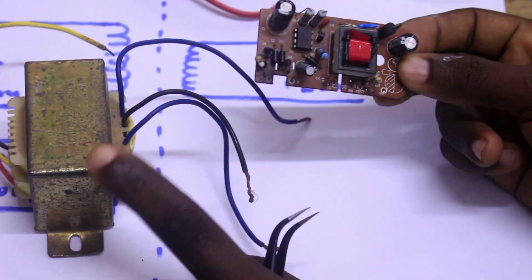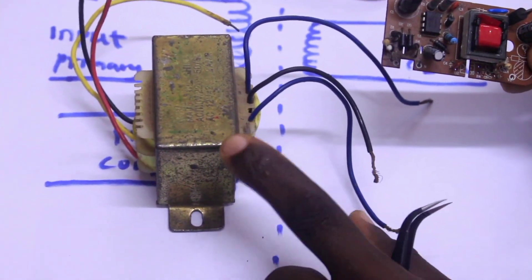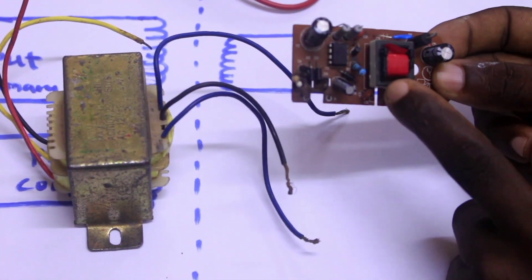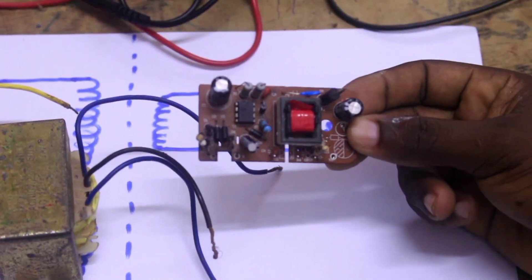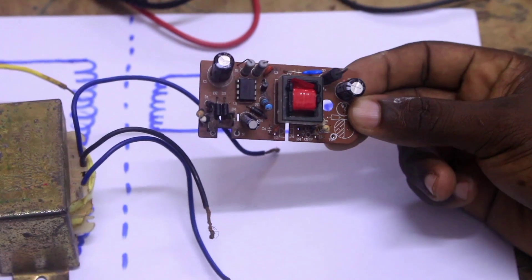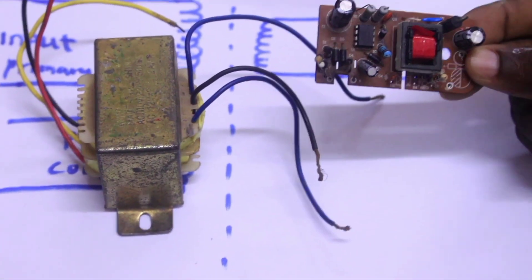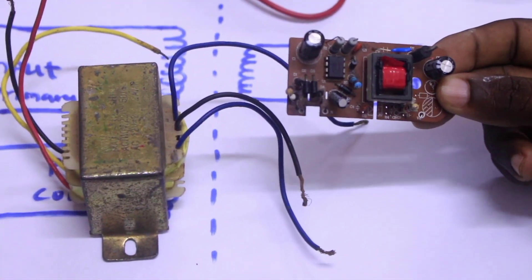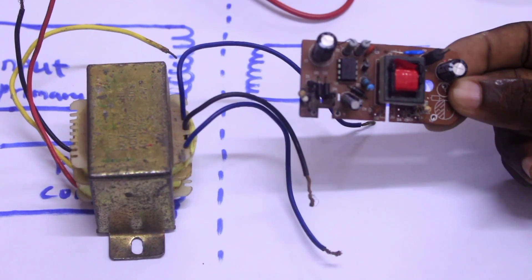This transformer operates at 50 to 60 Hz while this transformer operates between 10 kHz to 1 MHz. So this transformer operates at a very high frequency compared to our normal transformer and this ensures a smaller size and also high power transfer.